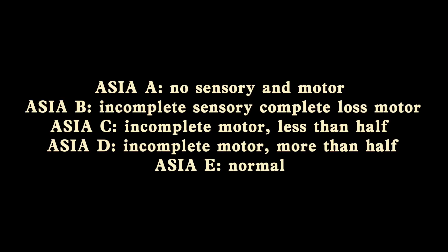established a grading system called the ASIA Impairment Scale to describe the severity of spinal cord injury. ASIA-A is the complete spinal cord injury with no sensation or motor function. ASIA-B is the incomplete sensation function with complete loss of motor function.